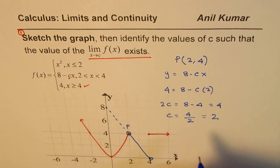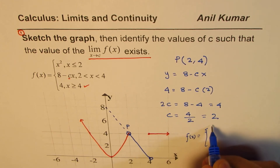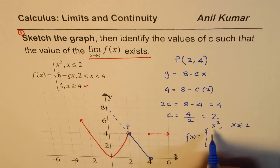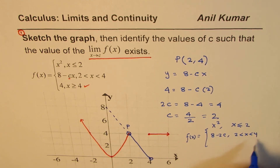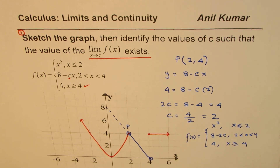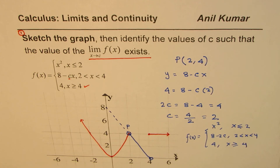We can now redefine the function with c = 2: f(x) = x² for x ≤ 2, f(x) = 8 − 2x for x between 2 and 4, and f(x) = 4 for x ≥ 4. That is how we find the value of c and redefine the function. The important part is that sketching the graph comes first.